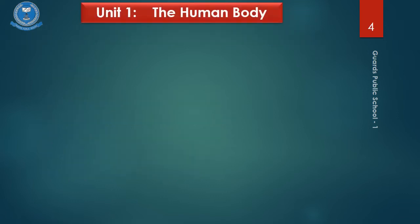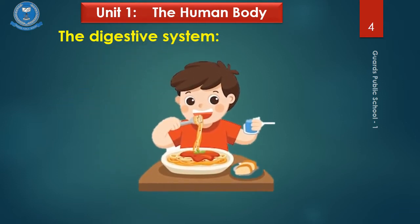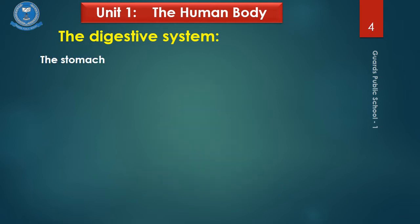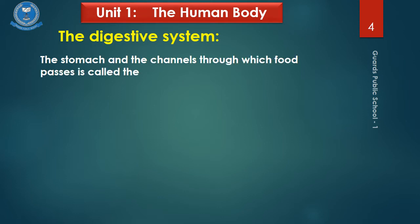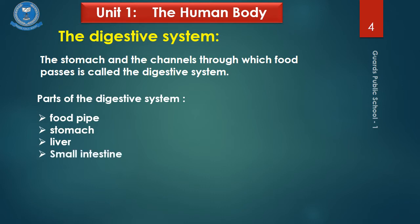I am going to start with the first topic: the digestive system. When we eat food, it passes through different parts of the body. The stomach and the channels through which food passes is called the digestive system. The main parts are the food pipe, stomach, liver, small intestine, and large intestine.